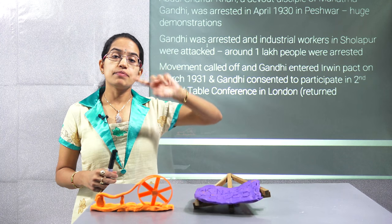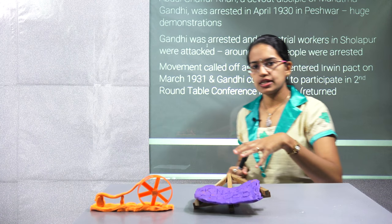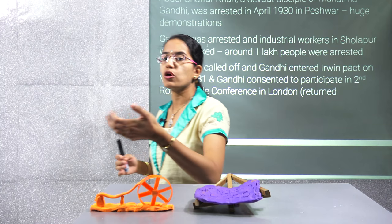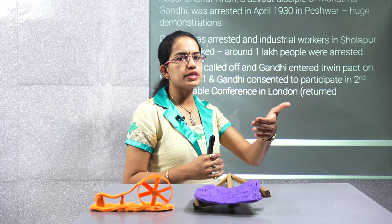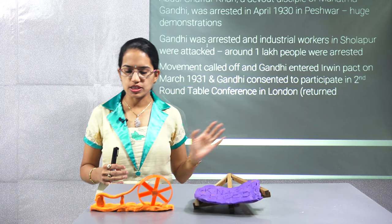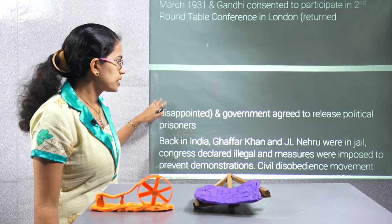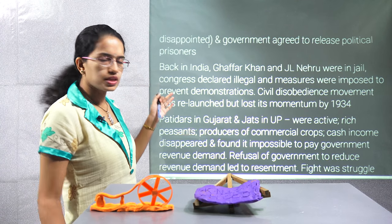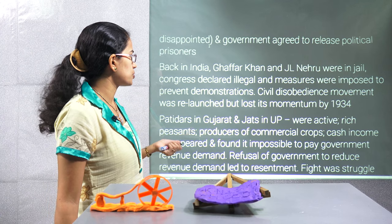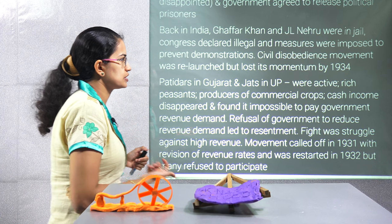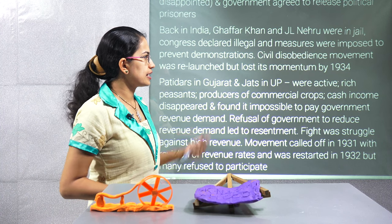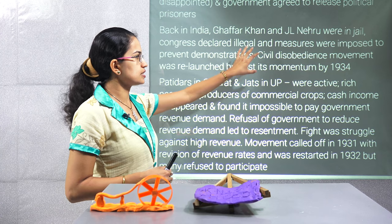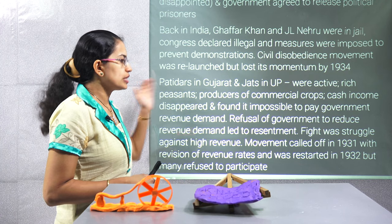Similar to how the non-cooperation movement was called off after the Rowlatt Act period and Jallianwala Bagh, the civil disobedience movement was called off once after the Salt Satyagraha. Gandhi participated in the Gandhi-Irwin Pact and the second round table conference. But in India the scenario was different — many leaders were in jail, the Congress was declared illegal, and many measures were imposed on Congress. On the other hand, you had the rich peasant community.